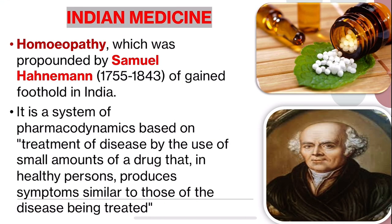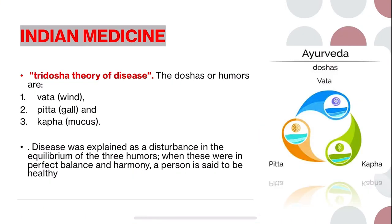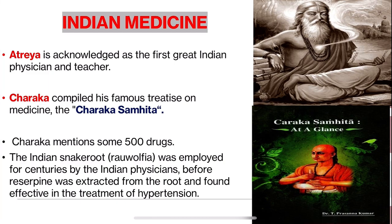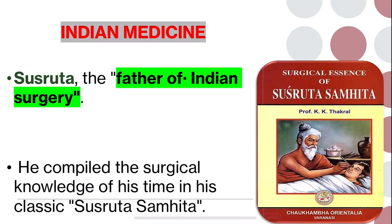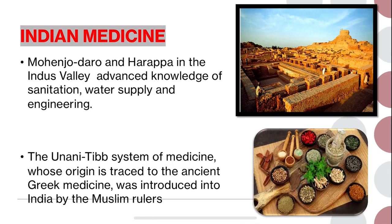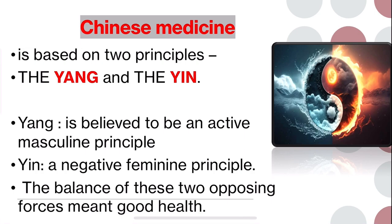We are done with Indian medicine. To recap: we studied the two systems of Indian origin — Ayurveda and Siddha; Dhanvantri the Hindu god of medicine; Atreya the great Indian physician and teacher; Charaka who wrote Charaka Samhita; Sushruta the father of surgery who wrote Sushruta Samhita and pioneered rhinoplasty; the Trishodha theory of disease; and also Mohenjo-daro and Harappa, Yunani and homeopathic medicine.